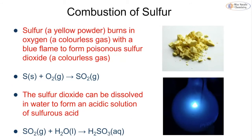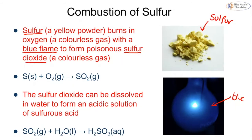Sulfur is a yellow powder, and when burned in oxygen it produces a very bright blue flame and forms the poisonous gas sulfur dioxide. The equation is: S(s) + O₂(g) → SO₂(g). We can then dissolve sulfur dioxide into water to form sulfurous acid — note it is sulfurous, not sulfuric acid: SO₂ + H₂O → H₂SO₃.